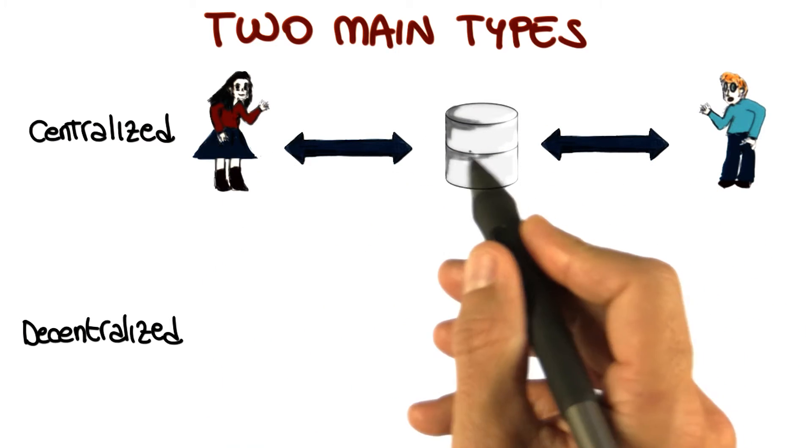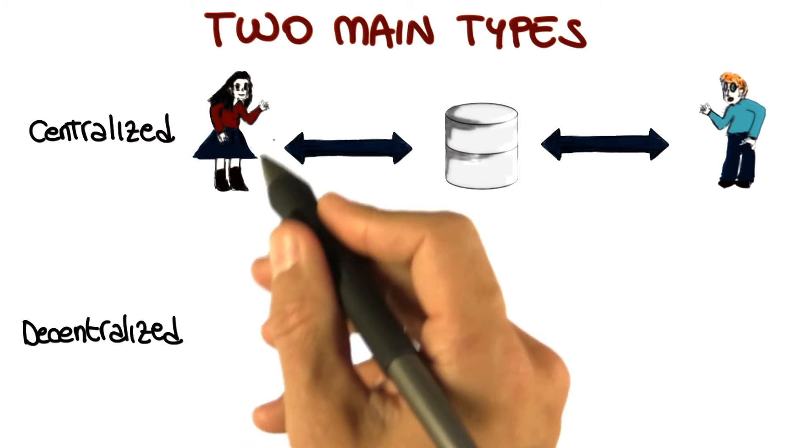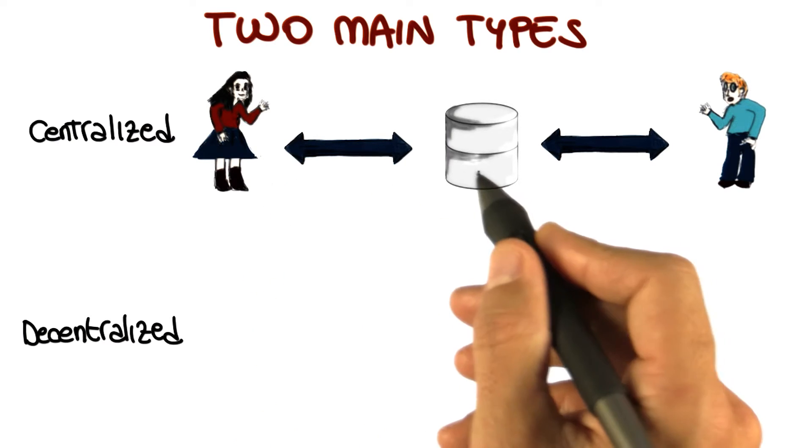So when Janet commits a file, the file will go from her local working directory to the repository, and the same will happen to Brad.